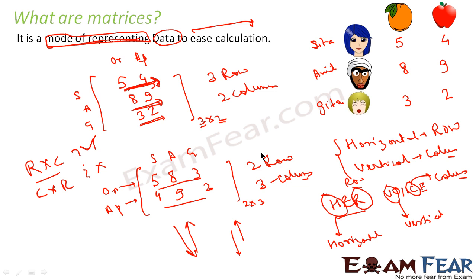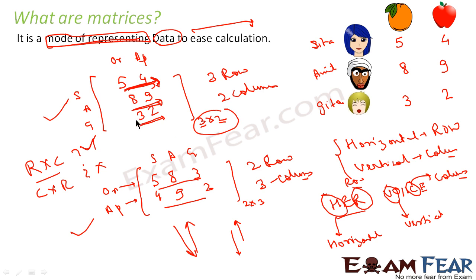So once we have understood the non-mathematical definition of matrices — matrices is nothing but a mode of representing data — we saw the example where Sita, Amit, and Gita had oranges and apples and we represented it in two matrix forms. We also noted that horizontal sets are called rows and vertical sets are called columns, with the memory tip 'HER VOICE': horizontal means row, vertical means column. And the order is always row into column.